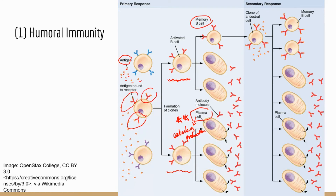If you are exposed to that antigen again, memory B cells can respond very quickly. They can develop into plasma cells and produce antibodies, but because of the memory cells, the response is much faster than the first time around. This allows you to mount a faster, stronger immune response against pathogens you're exposed to again, so the second time your body is much better protected than the first time.